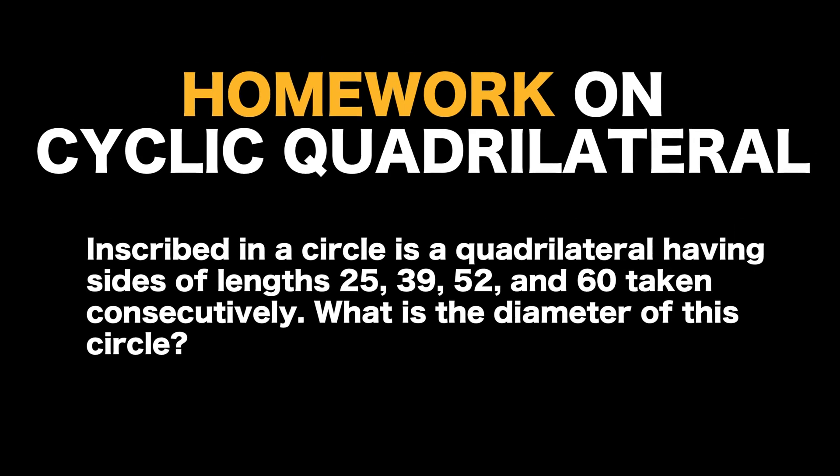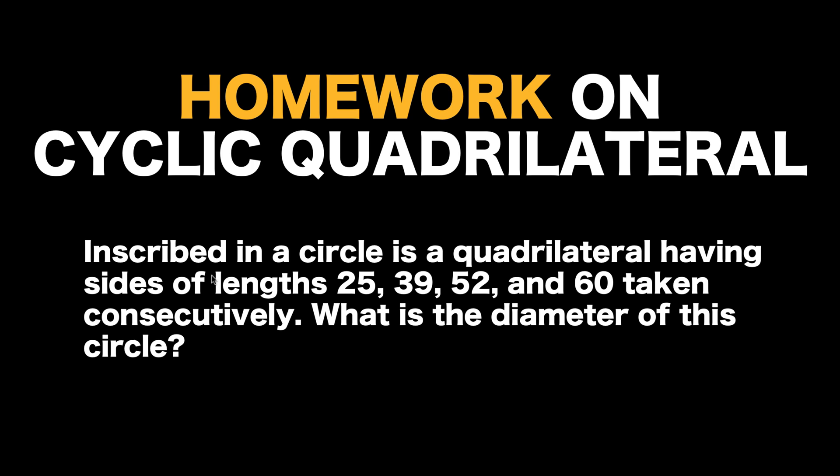And here is our homework for this video. Inscribed in a circle is a quadrilateral having sides of lengths 25, 39, 52, and 60 taken consecutively. What is the diameter of this circle? If you know the answer, please write them in our comments down below.